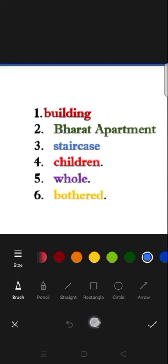Let us start with the difficult words of the chapter. The first word is building, B-U-I-L-D-I-N-G. Second word, Bharat Apartment, B-H-A-R-A-T-A-P-A-R-T-M-E-N-T. Third word, Staircase, S-T-A-I-R-C-A-S-E. Fourth word, Children, C-H-I-L-D-R-E-N. Fifth word, Whole, W-H-O-L-E.